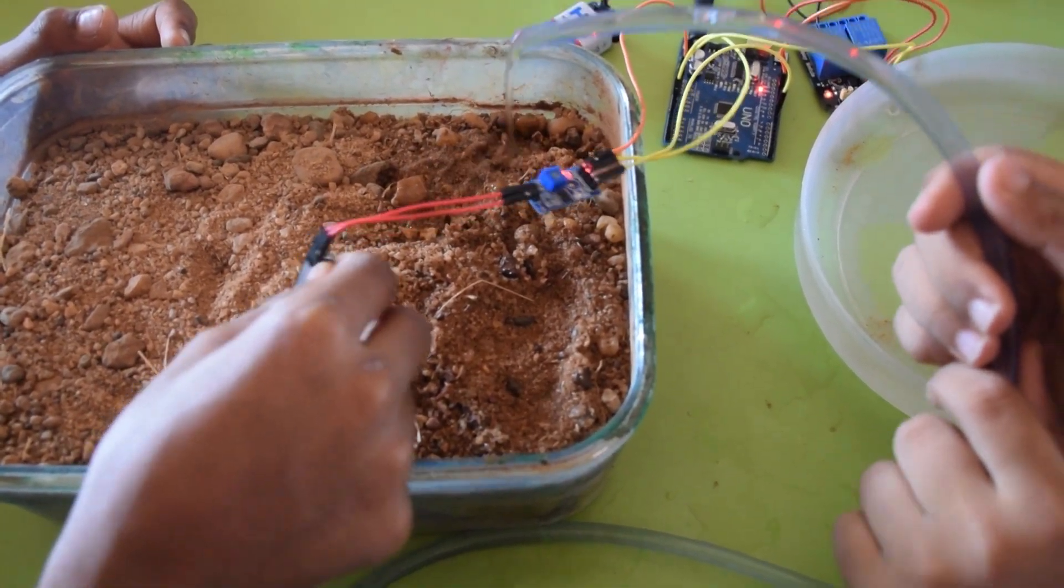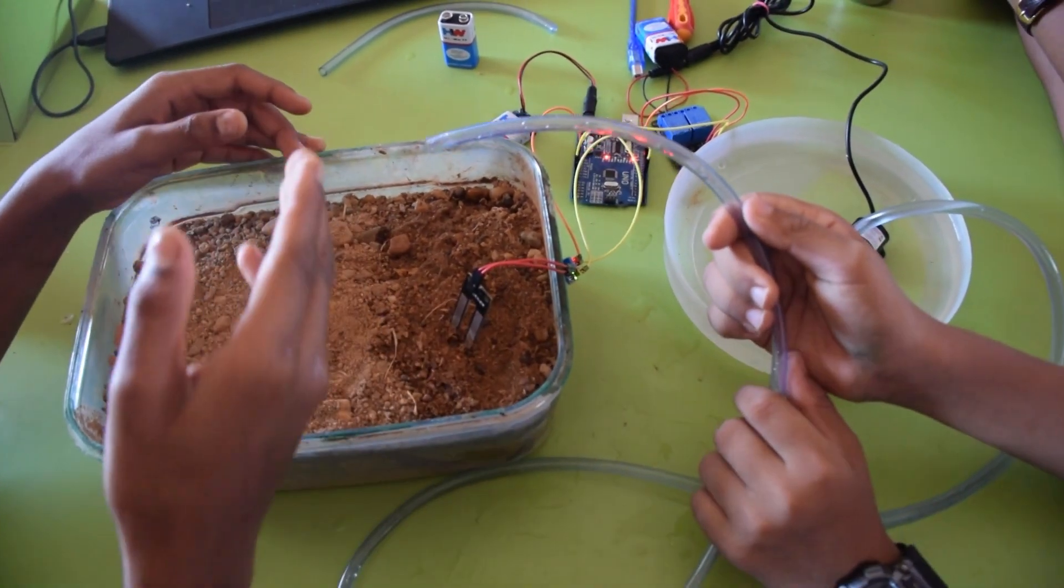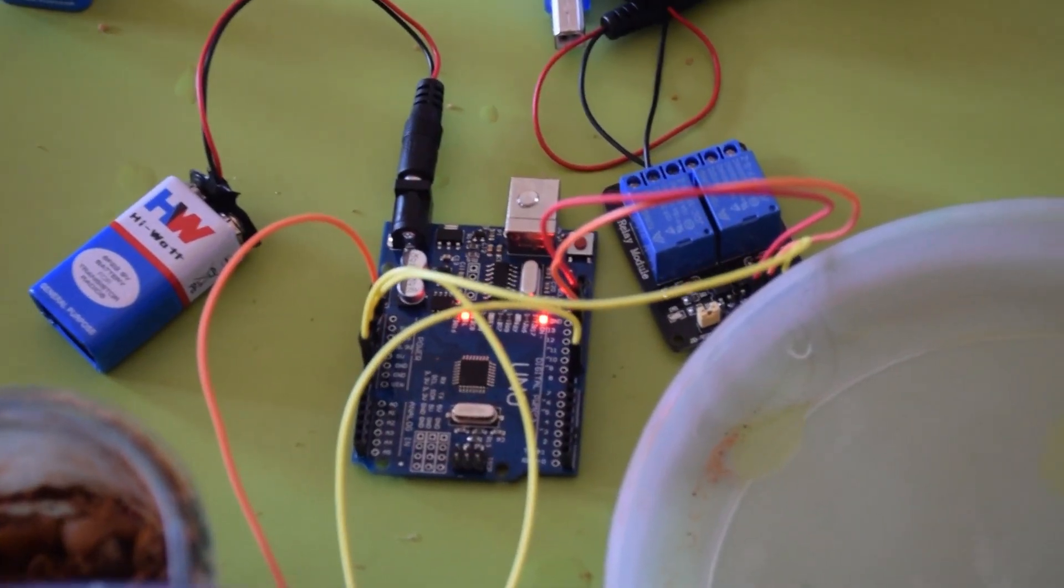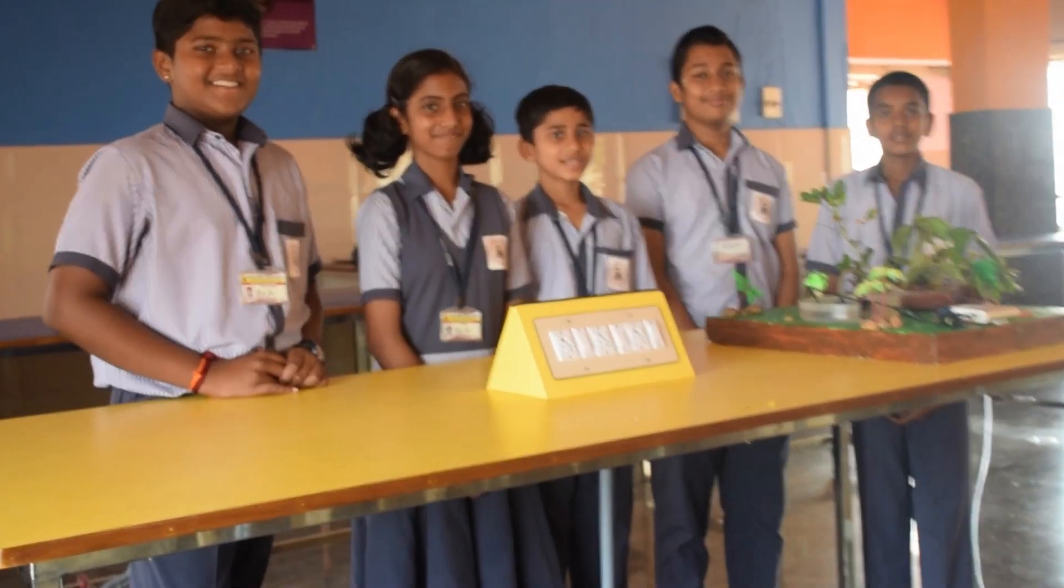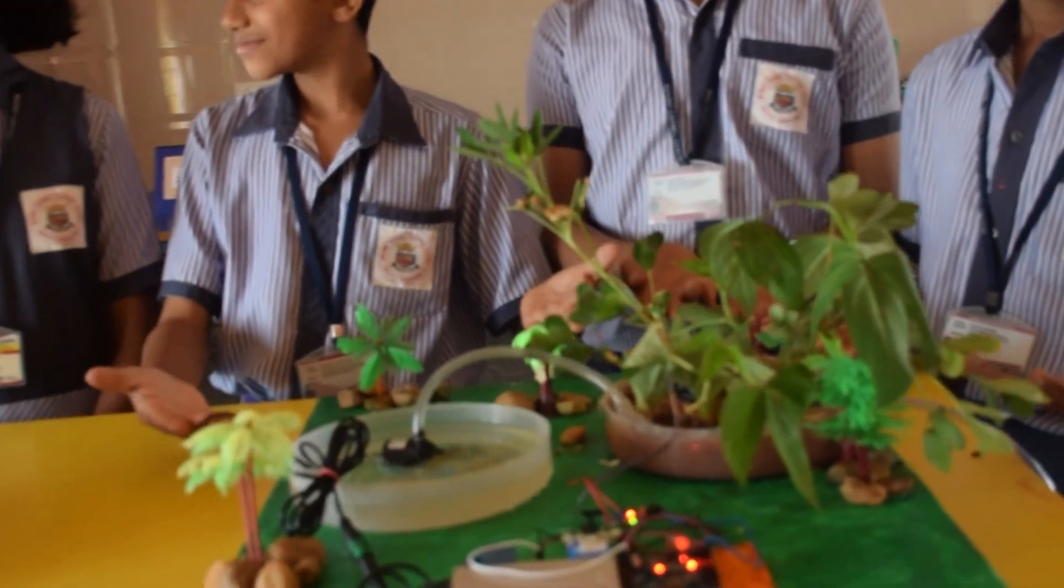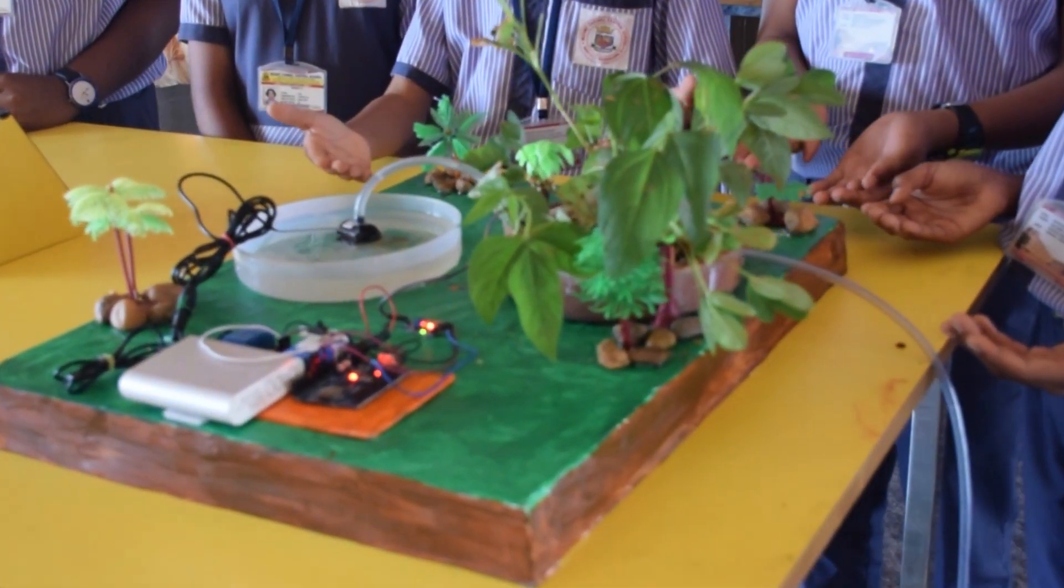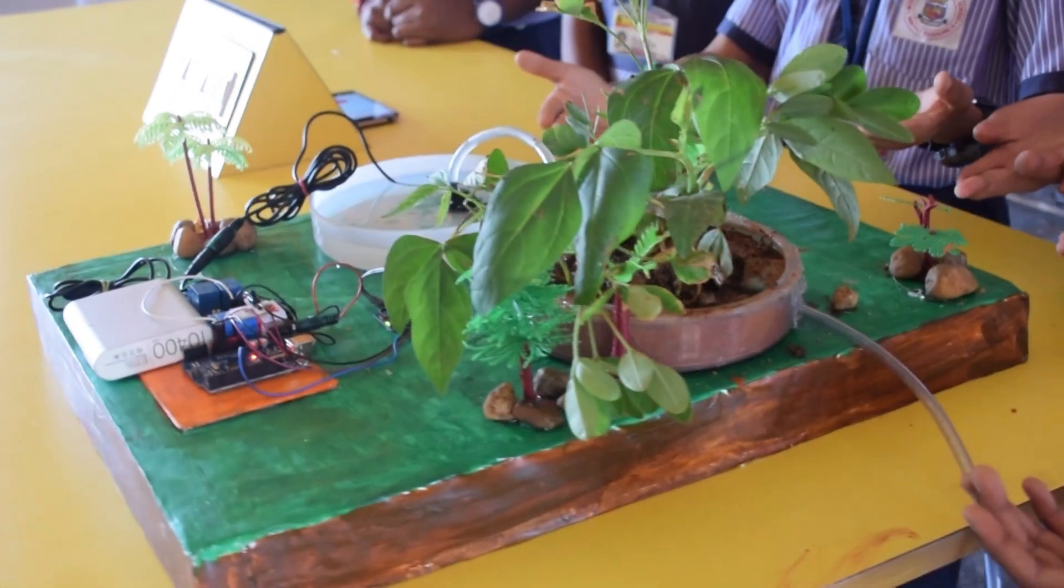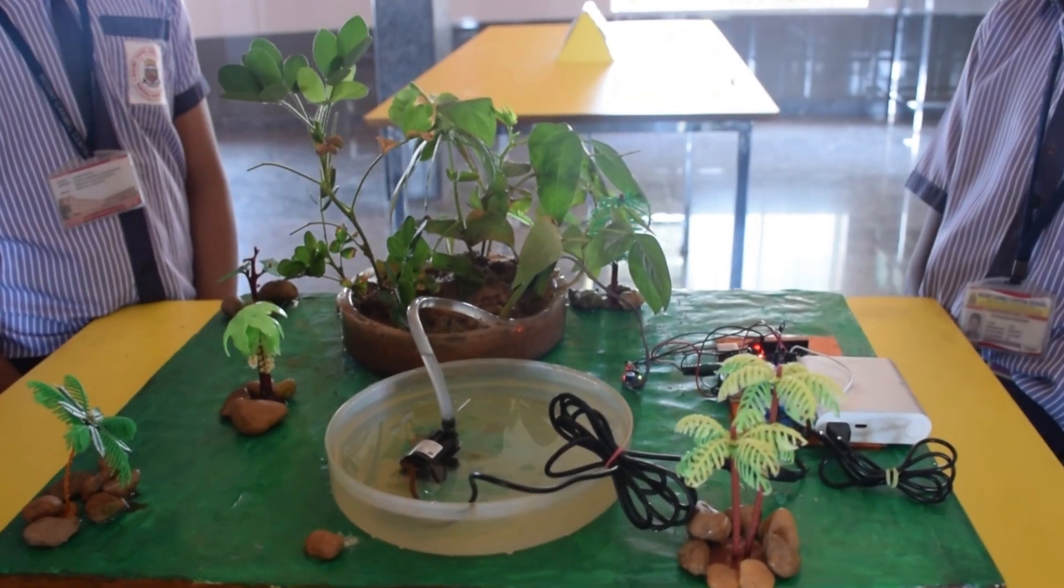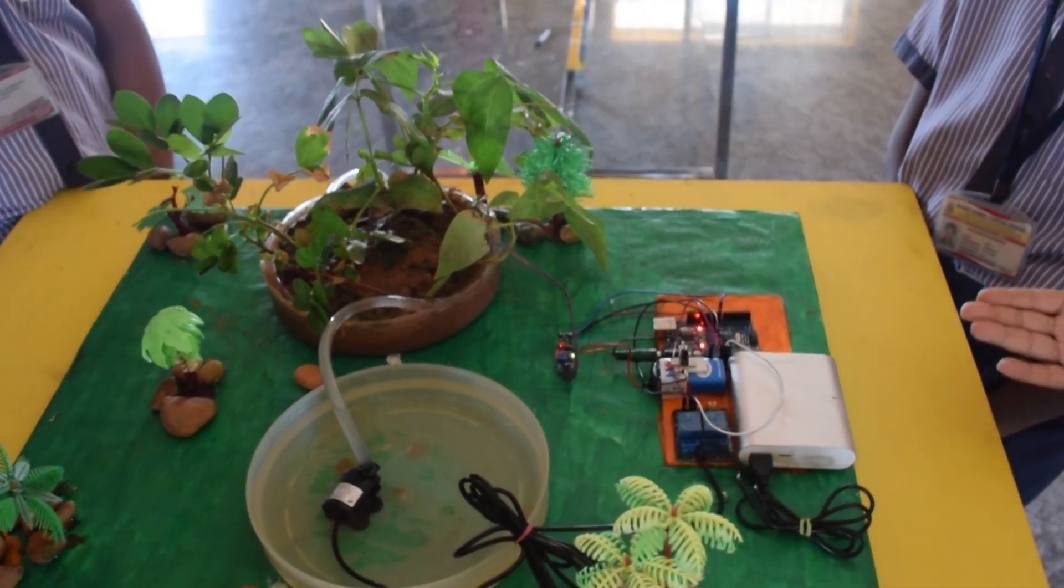When it is wet again, the pump turns off because the Arduino sends a message to the relay to turn off the DC pump. Now, this is the vital product of our project. We now explain the working principle of this project.